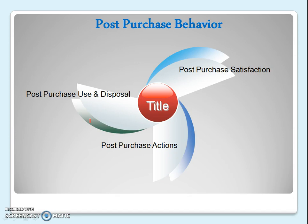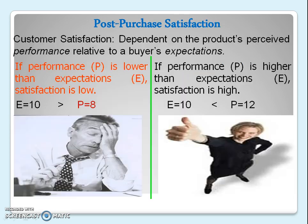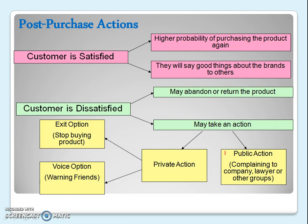The last step is post-purchase behavior, which consists of three things: post-purchase satisfaction, post-purchase actions, and post-purchase use and disposal. For satisfaction, if your expected performance was 10 but actual performance was 8, you will be dissatisfied. If expectation was 10 and the product performed 12, you will be delighted. When satisfied, people typically take two actions: a higher probability of repurchasing the product, and saying good things about the brand to others.